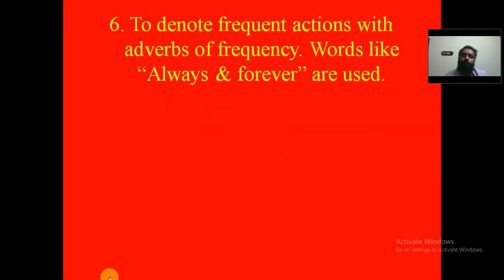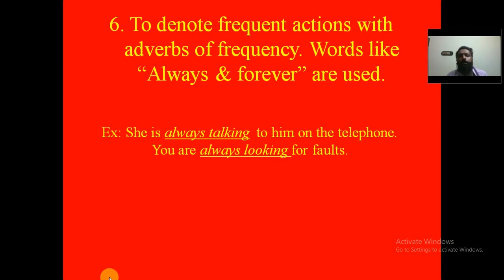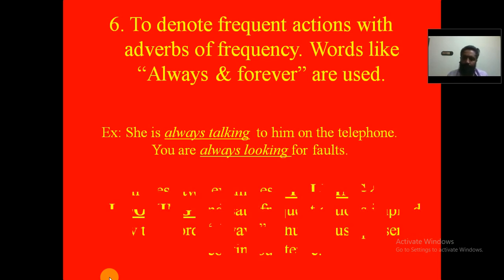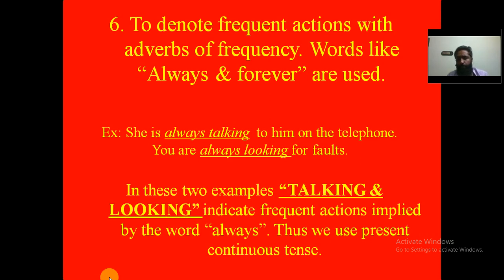The present continuous tense is used to denote frequent actions with adverbs of frequency like 'always' and 'forever.' Examples: 'She is always talking to him on the phone' and 'You are always looking for faults.' 'Talking' and 'looking' are frequent actions implied by the adverb 'always.'